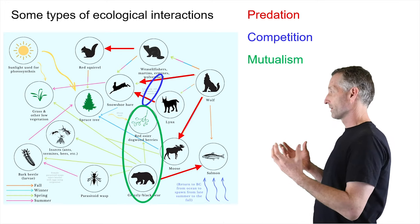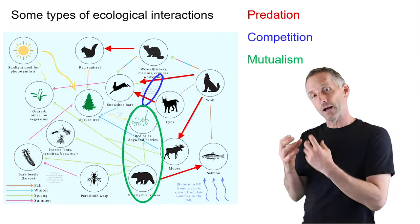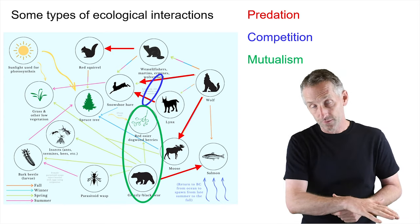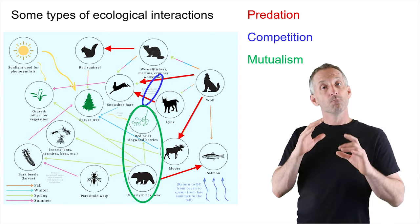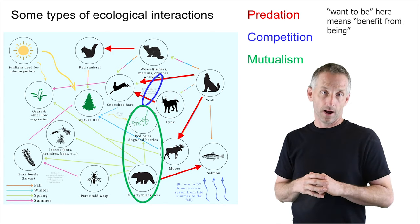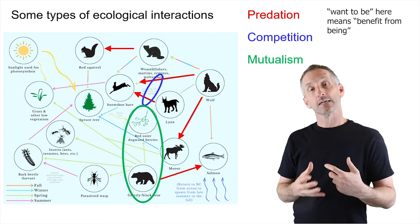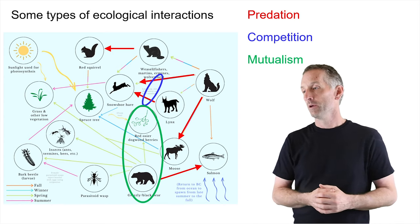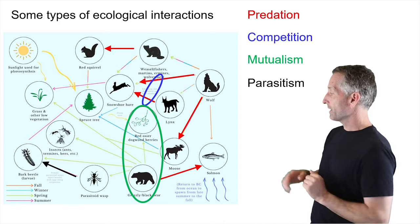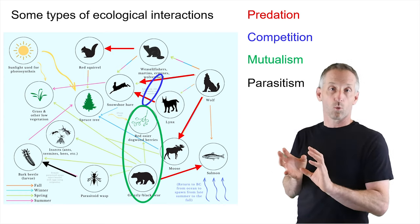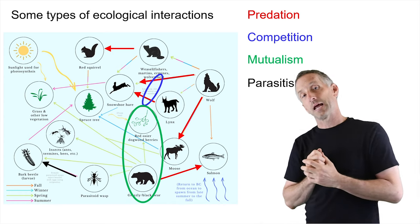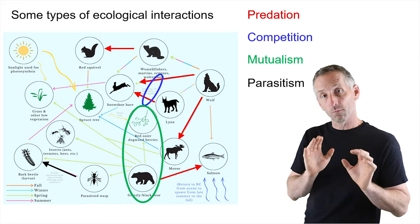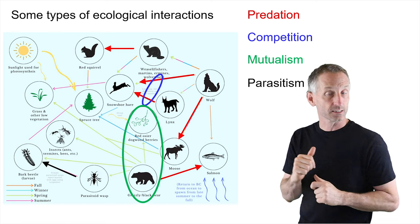You can also think about mutualisms — interactions between species that benefit both of them. In the introductory video, many berries want to be eaten by animals because animals are an important dispersive agent for the seeds of that plant. And finally, there are parasitic interactions, where one organism lives on and obtains benefits from another without directly killing it. You'll see that in a subsequent lecture covering parasitoid wasps influencing bark beetles in the context of climate change.